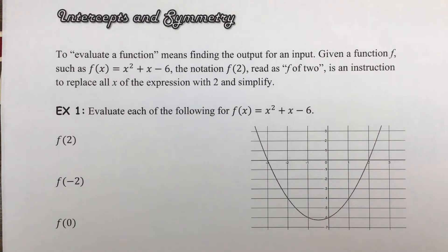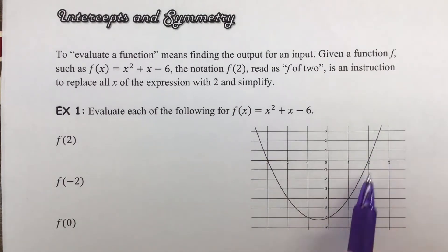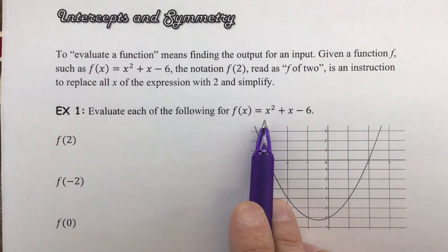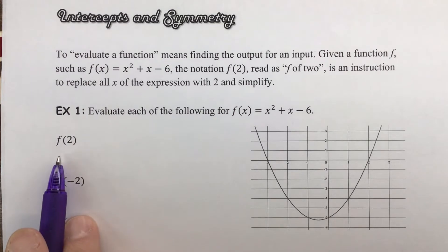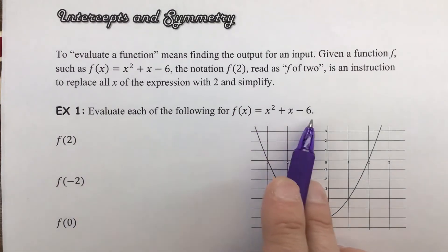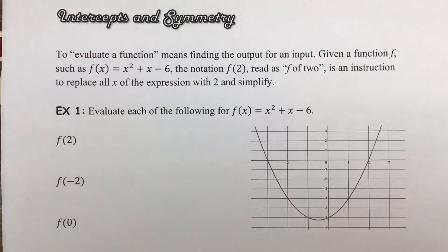Let's do a little bit of practice with this. This is a graph of the function f(x) = x squared plus x minus 6. As we evaluate it, we should be able to see those outputs for those given inputs. Here's an instruction: let's take the function's expression and plug a 2 in wherever we see an x.